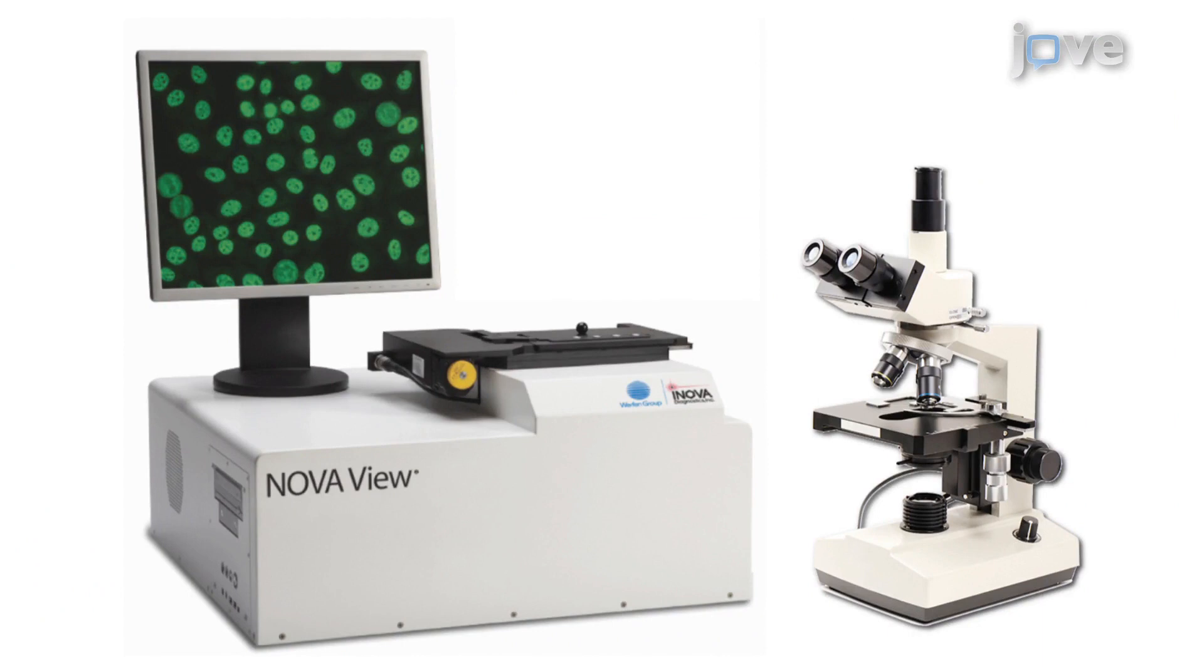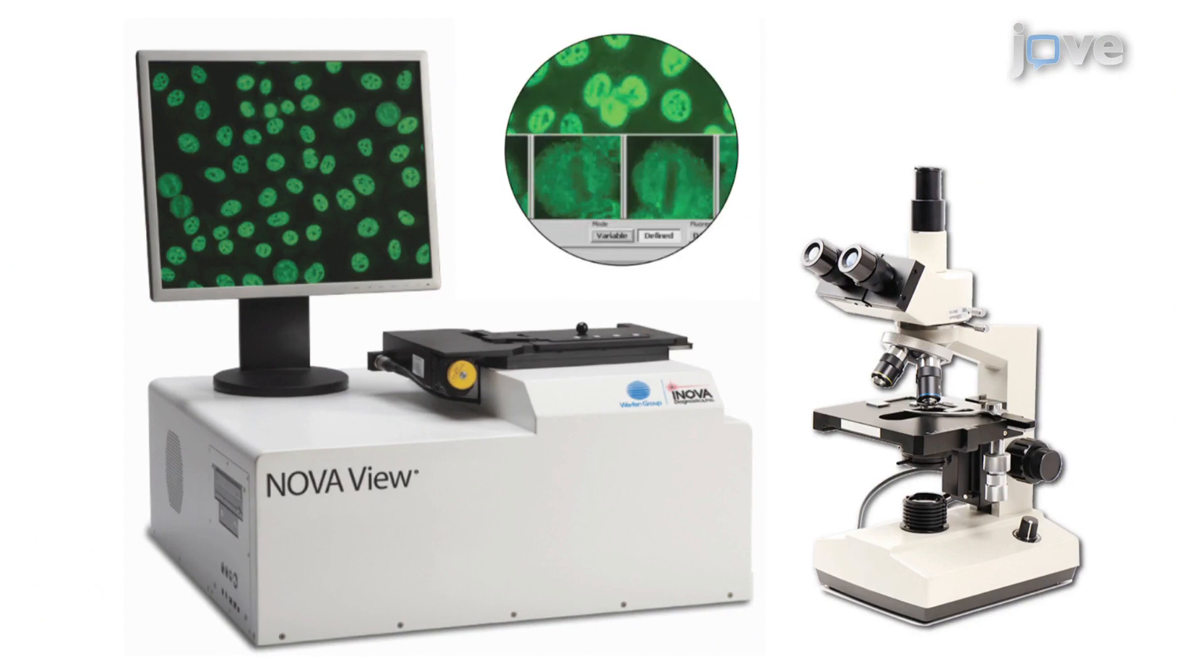When viewed through a fluorescence microscope, autoantibody positive samples will exhibit an apple-green fluorescence corresponding to areas of the cell or nuclei where autoantibody has bound in a pattern of fluorescence indicative of the antigen being present.